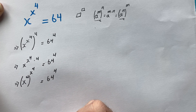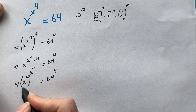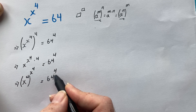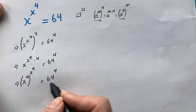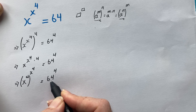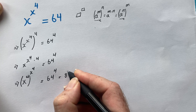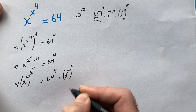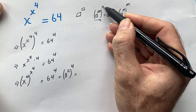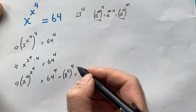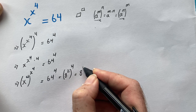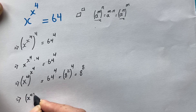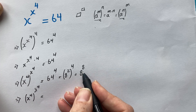Now the left hand side has something raised to the power of itself. We need to make the right side match that form. Fortunately, 64 is a nice number — it can be written as 8 to the power of 2. So 64 to the power of 4 becomes 8 squared, raised to the power of 4, which by the exponent rule equals 8 to the power of 2 times 4, or 8 to the power of 8.